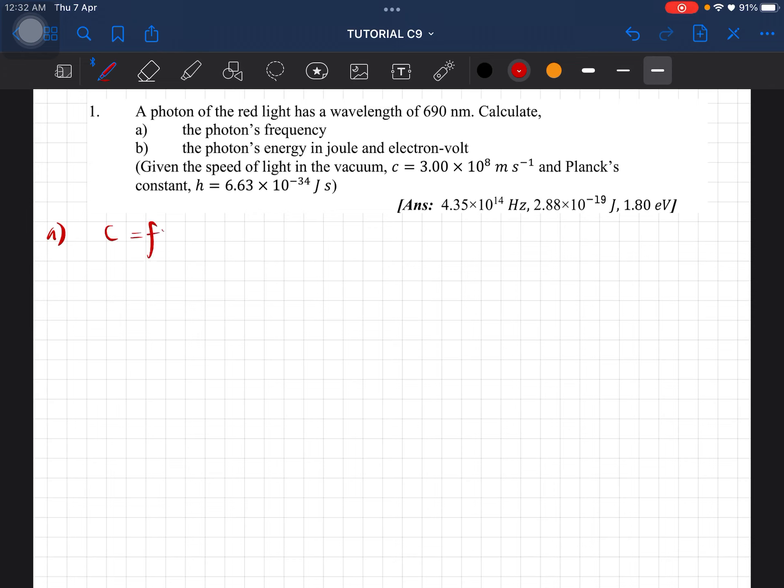So the first thing is we're going to use the formula for speed of light, which is c equals f lambda. The speed of light is given in the question, so if we rearrange for frequency, we get c over lambda, and this gives us 4.35 times 10 to the power of 14 hertz.